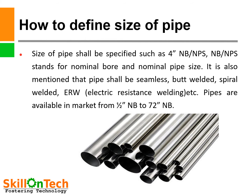How to define size of pipe? Size of pipe shall be specified such as 4 inch NB-NPS. NB-NPS stands for nominal bore and nominal pipe size. It is also important to mention the manufacturing method — whether the pipe shall be seamless or welded, spiral welded, ERW (electrical resistance welding), etc. Pipes are available in the market from 1.5 inch NB to 72 inch NB, so we must specify the correct specification of pipe.